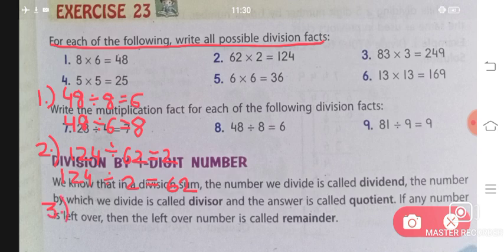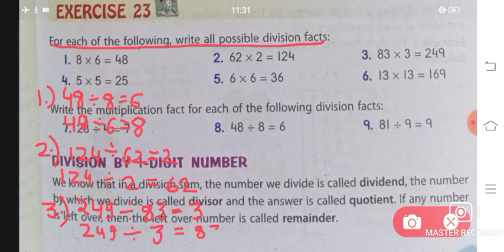Number 3: 83 multiplied by 3 gives you 249. So 249 divided by 83 equals 3. Similarly, 249 divided by 3 equals 83. Since there are two different digits in the multiplication, the possible division facts are 2.